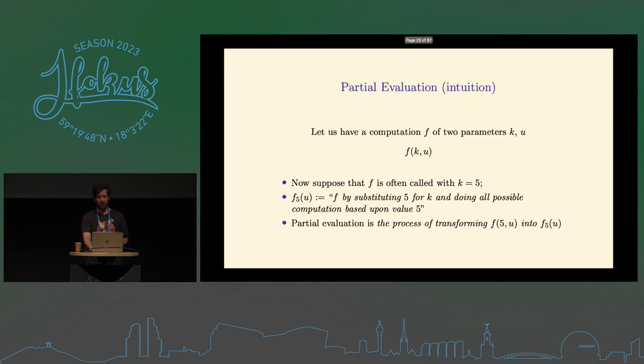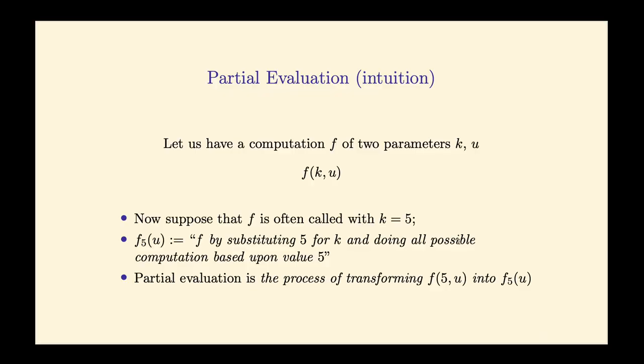What is partial evaluation? Let's give an intuitive version. We have a function F with two parameters K and U. Suppose we want to call F very often with K equal to 5, so we bind K to 5. We could define a new function F5 that takes only U as a parameter and always computes F(5, U). F5(U) is defined as F by substituting 5 for K and doing all possible computation based on that value. Partial evaluation is the process of obtaining this F5.